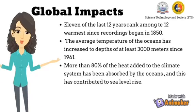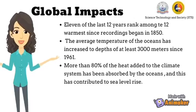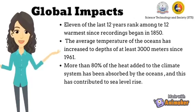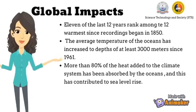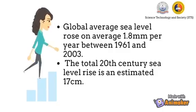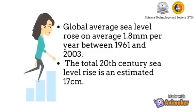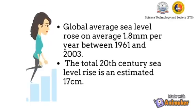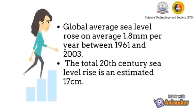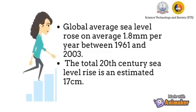Global impacts: 11 of the last 12 years rank among the 12 warmest since recordings began in 1850. The average ocean temperature has increased to depths of at least 3,000 meters since 1961. More than 80% of the heat added to the climate system has been absorbed by the oceans, contributing to sea level rise. Global average sea level rose 1.8 mm per year between 1961 and 2003, with total 20th century sea level rise estimated at 17 cm.